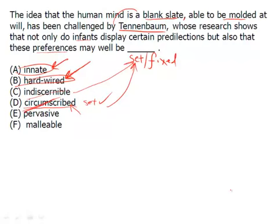Pervasive means spread throughout, a lot of wherever you go. You see it doesn't match with the context. And malleable is the exact opposite of what we want. That means something can be bent or molded. So out with that one. And again, answer choice A and B.